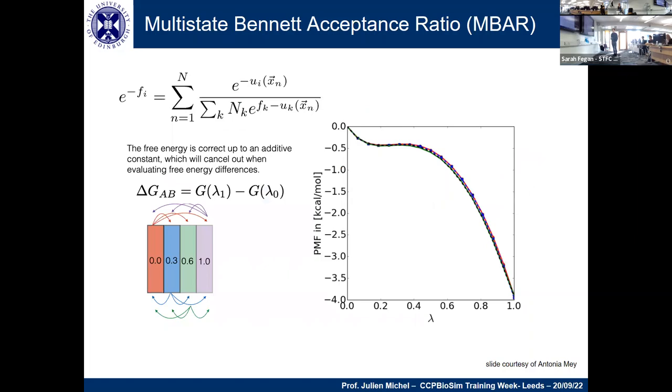Finally, there's the multistate Bennett acceptance ratio, which is a little bit more complicated. I'm not going to go into full details, but it can be shown that this is the lowest variance unbiased estimator of free energy. It's implemented in BioSimSpace and we'll be using it today. To give you a brief idea: on the left, we have exponential of negative f_i. f_i is the reduced free energy in some state i. i is the lambda index. Reduced means it's already been divided by kT, so there's no beta or kT in there.